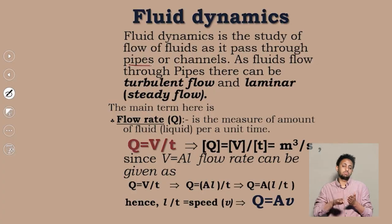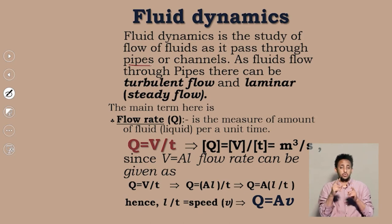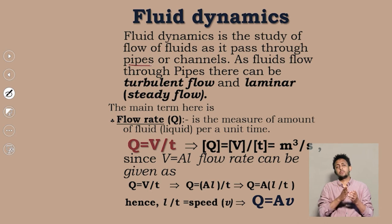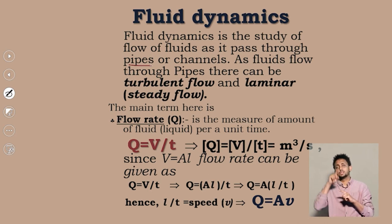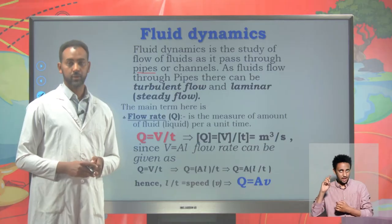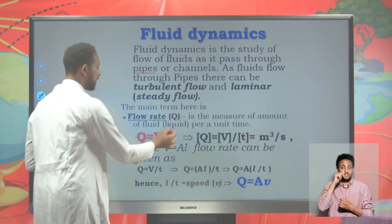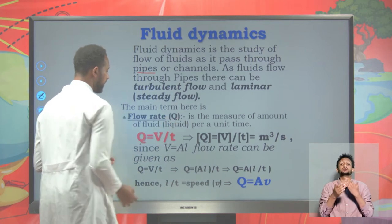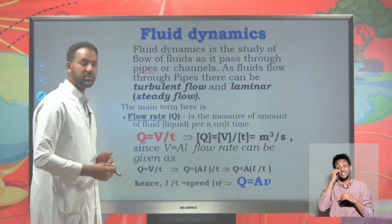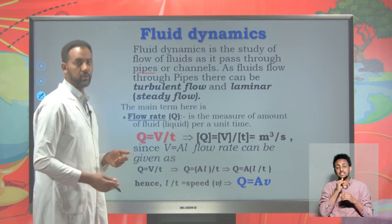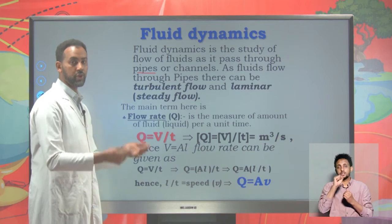We mainly focus on a uniform flow of fluids, though there might also be turbulent flow. Here we have a main term needed to discuss fluid dynamics, and this term is known as flow rate. We call it flow rate and it may be symbolized as Q. Sometimes flow rate is also known as discharge or charge.